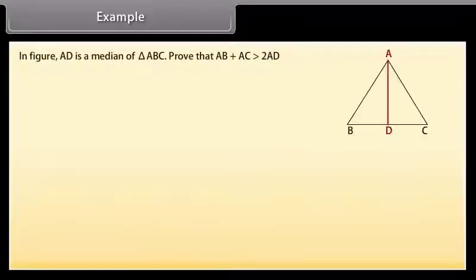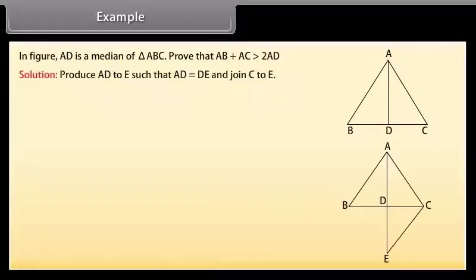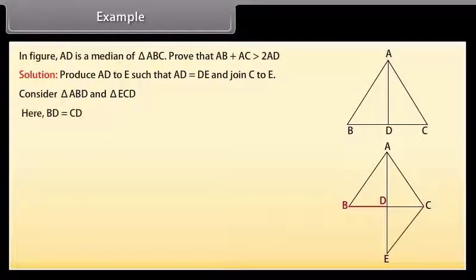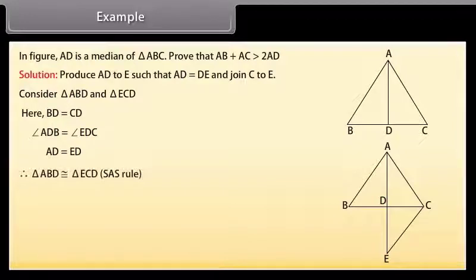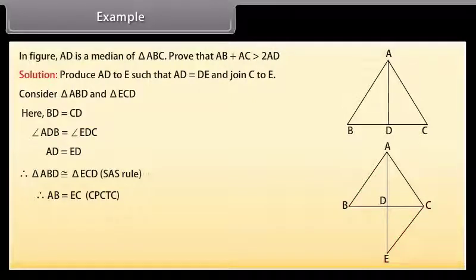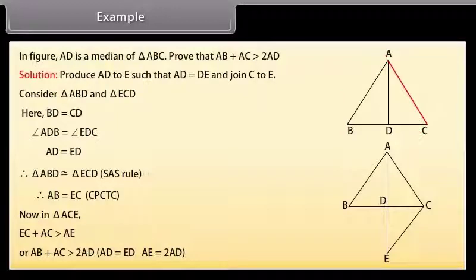Example: In the figure, AD is a median of triangle ABC. Prove that AB plus AC is greater than 2AD. Solution: Produce AD to E such that AD is equal to DE and join CE. Consider triangle ABD and triangle ECD. Here, BD is equal to CD, angle ADB is equal to angle EDC, and AD is equal to DE. Therefore, by SAS congruence rule, triangle ABD is congruent to triangle ECD. Therefore, AB is equal to EC by CPCTC. Now, in triangle ACE, EC plus AC is greater than AE, which means AB plus AC is greater than 2AD, because AD is equal to ED, which implies AE is equal to 2AD.